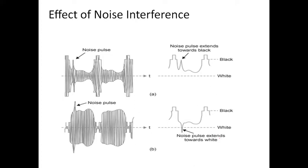Effect of noise interference on positive and negative modulation. There are numerous noise sources, but mainly the noise has a white Gaussian profile — it is additive noise. A noise pulse is added and it increases the amplitude of the signal as a spike. In picture A we have negative modulation; in picture B we have positive modulation.